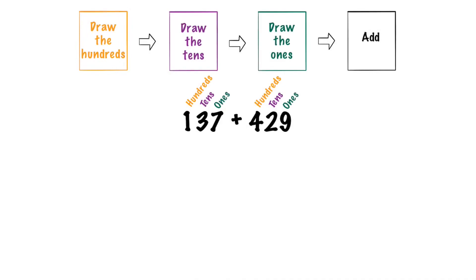We are going to add 137 plus 429 with models. Step one says to draw the hundreds. Let's go ahead and underline the hundreds and draw it. We have 100. Let's underline the other hundred which is a four which means we have 400.